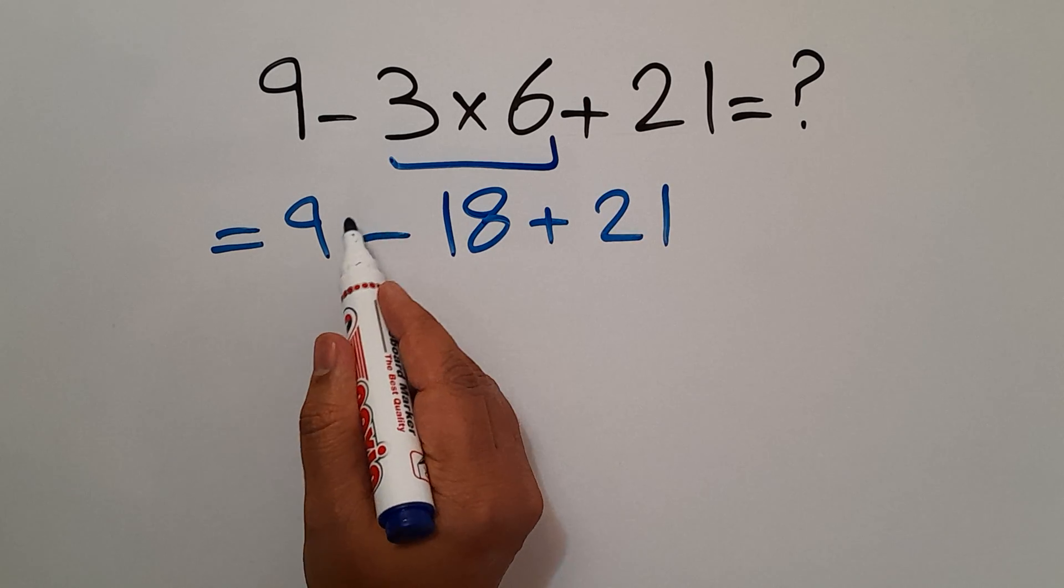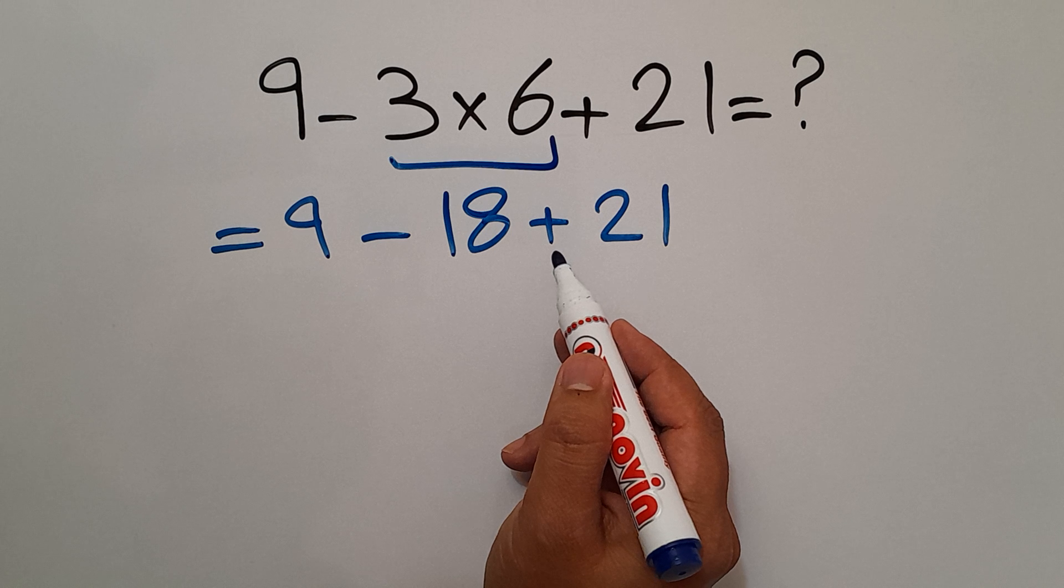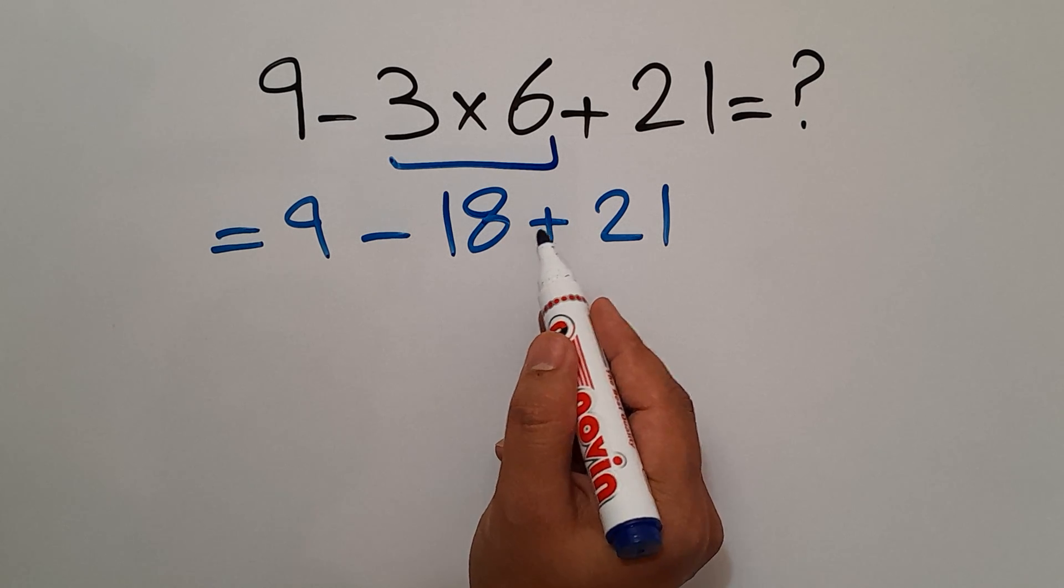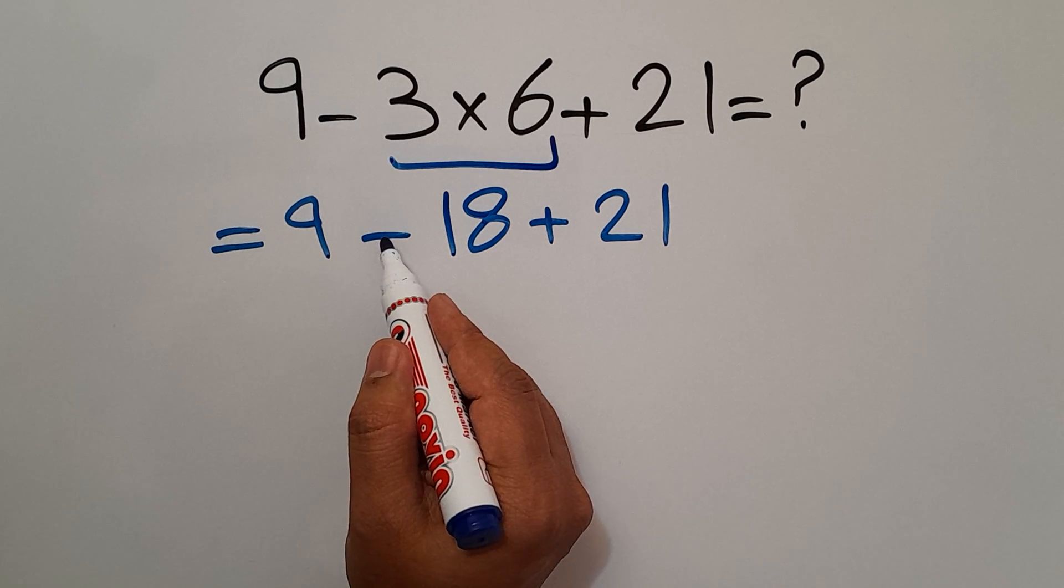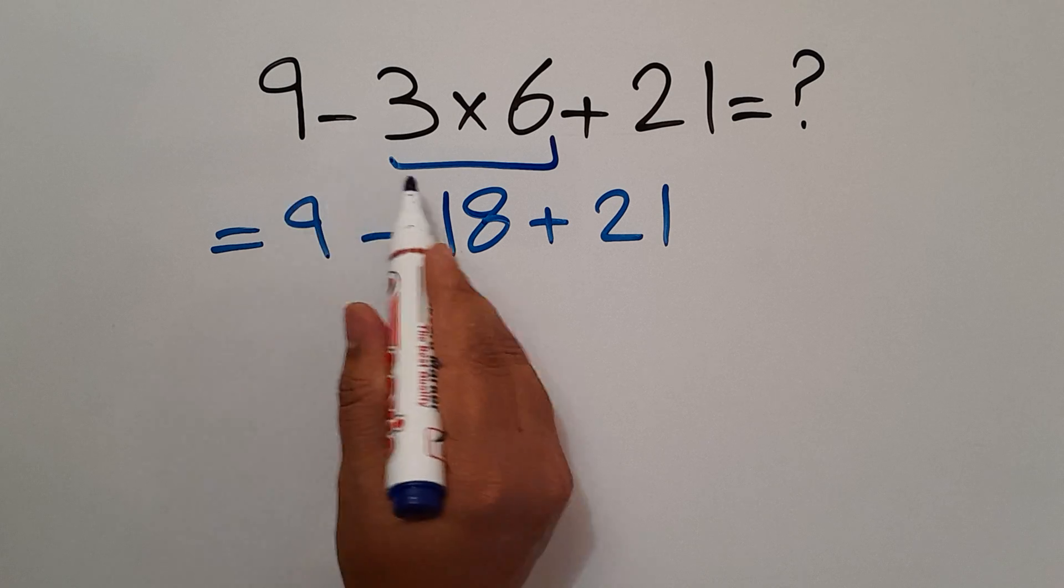Now we have this subtraction and this addition. According to the order of operations, addition and subtraction have equal priority and we have to work from left to right.